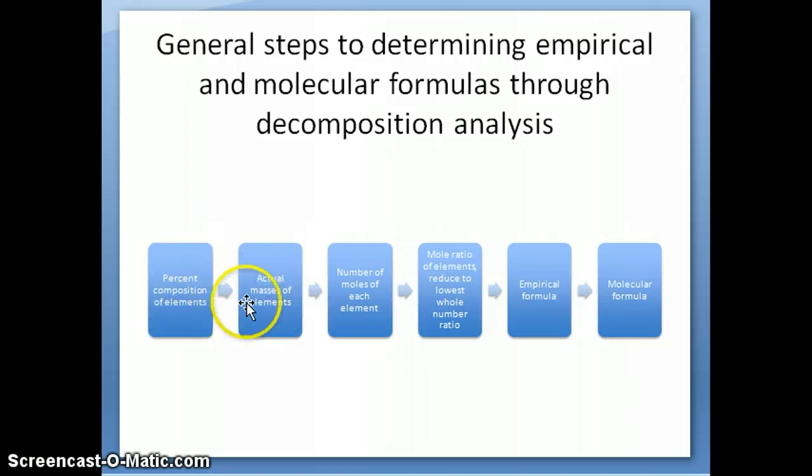These first two are the steps you have to start with. If you're given percent composition, then you want to figure out what is the actual mass of the elements. If you're not given a total mass, you can use usually 100 grams just for convenience to convert the percentages into masses.